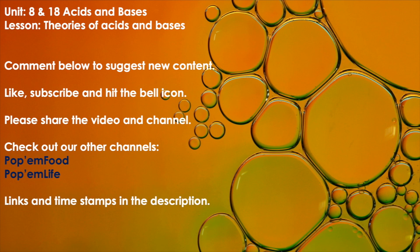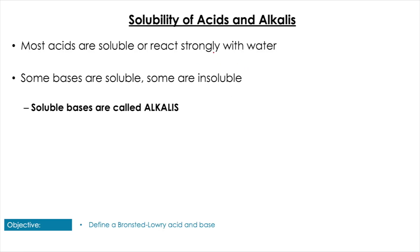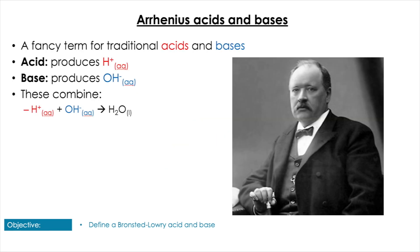We're going to start off at the beginning, looking at the different theories of acids and bases and how to define them. We're also going to look at forming conjugates and identifying them from their structure. A quick note: when we say alkali or base, alkalis are simply soluble bases. So all alkalis are bases, but not all bases are alkalis.